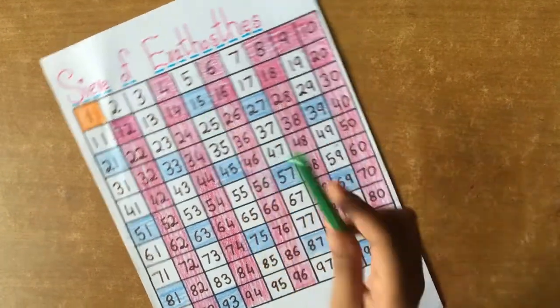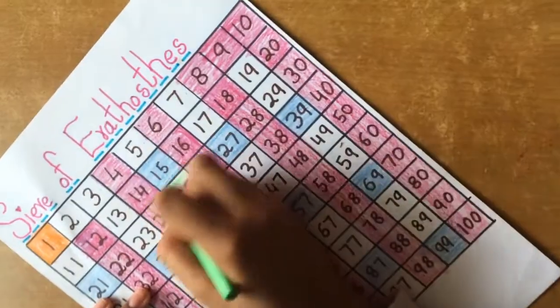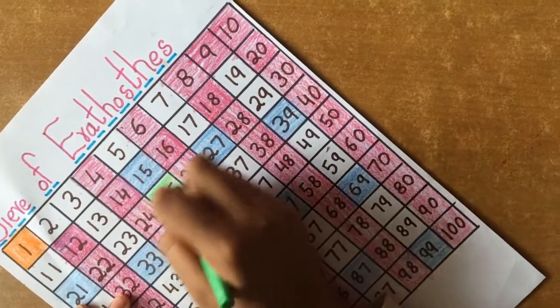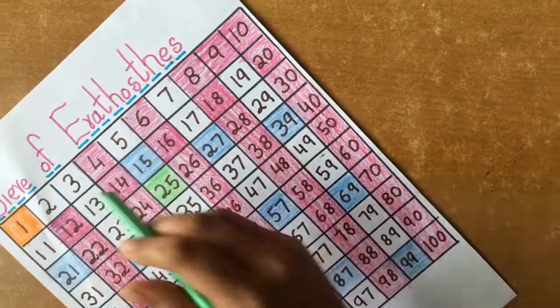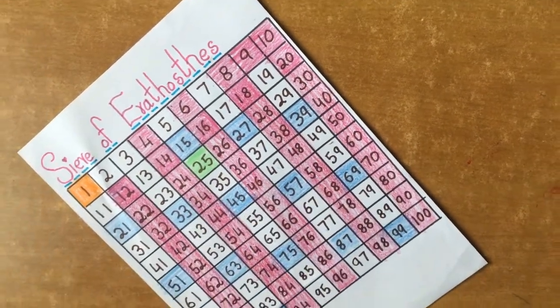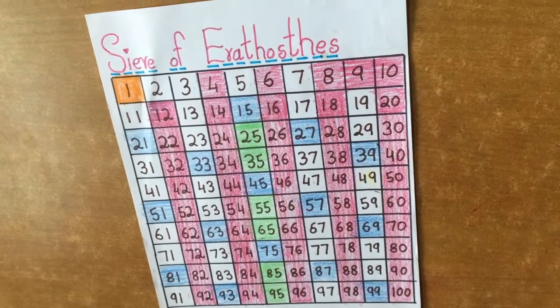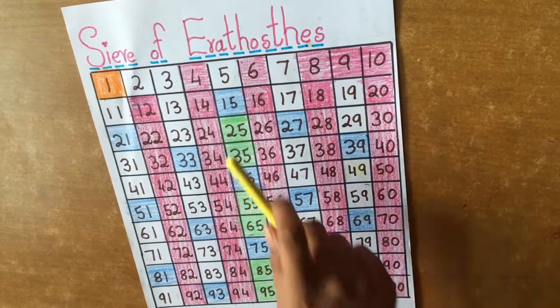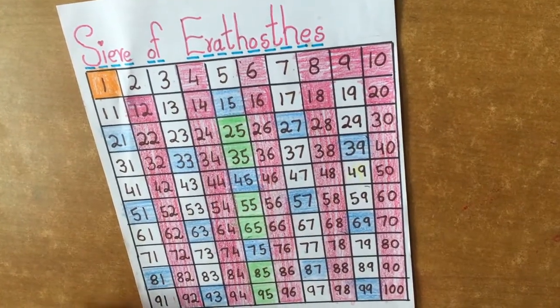Now we are going to mark 5 multiples. Like this we are going to mark all the 5 multiples. After marking all 5 multiples, we have to mark 7 multiples.